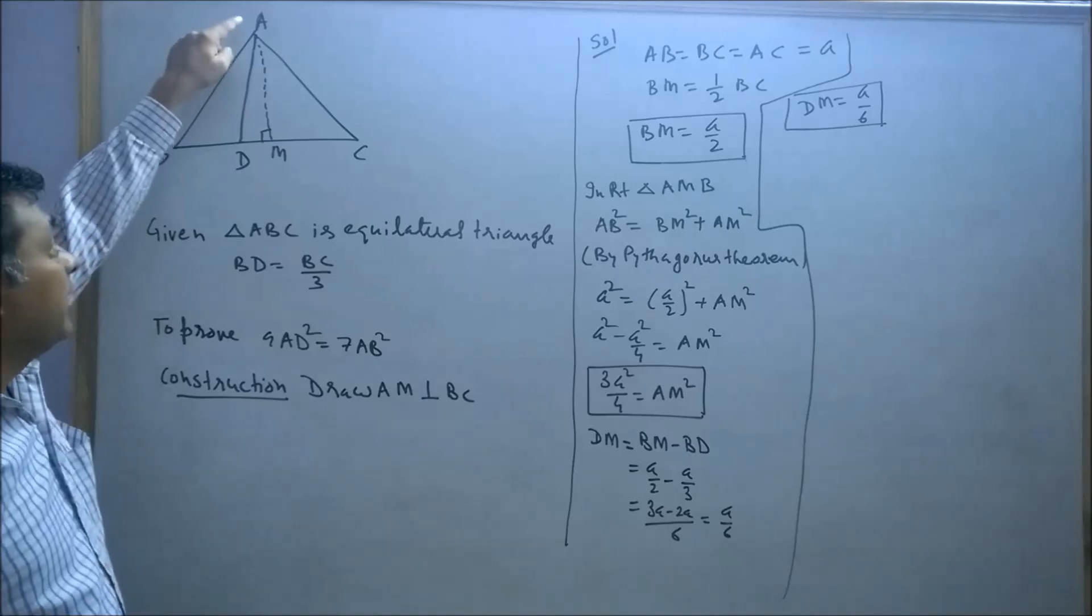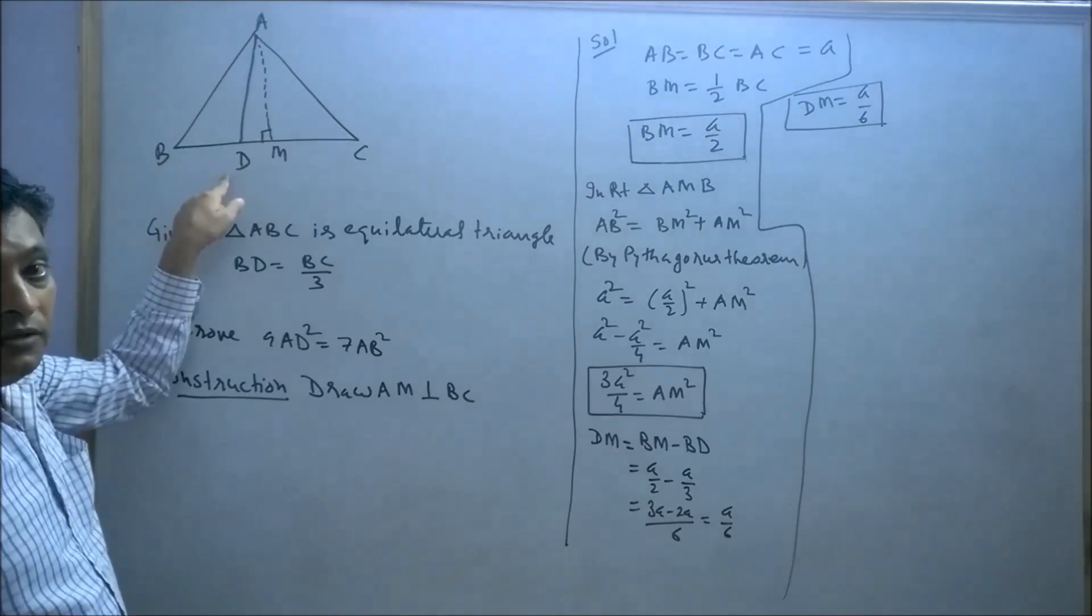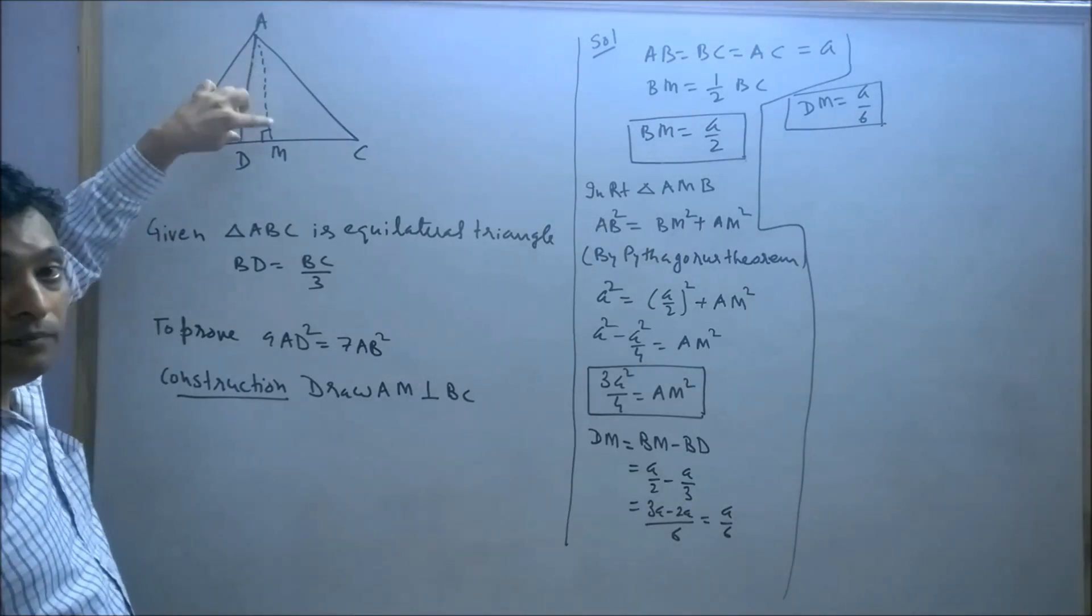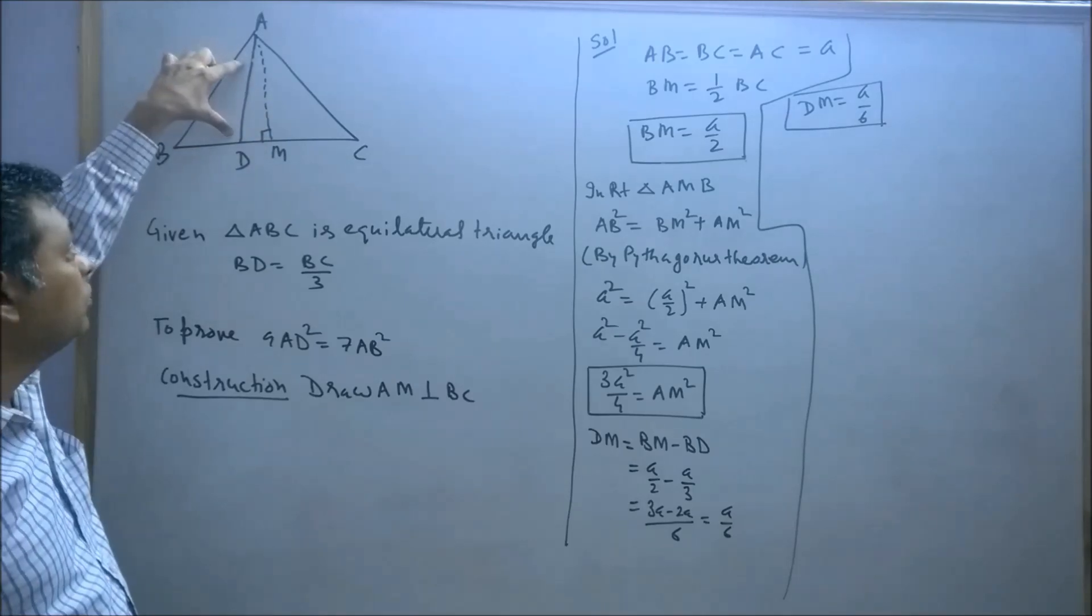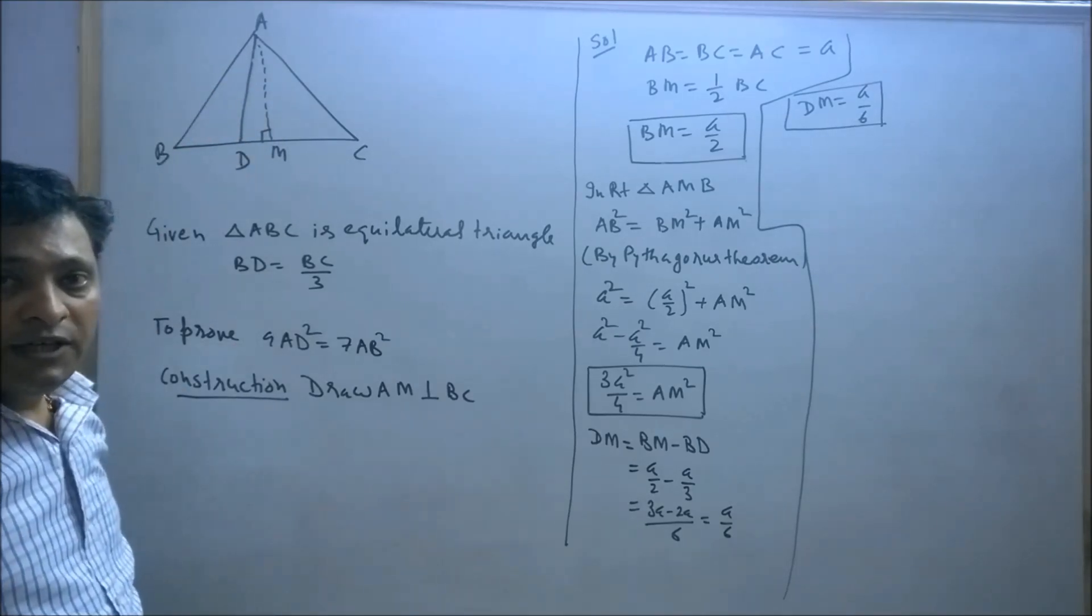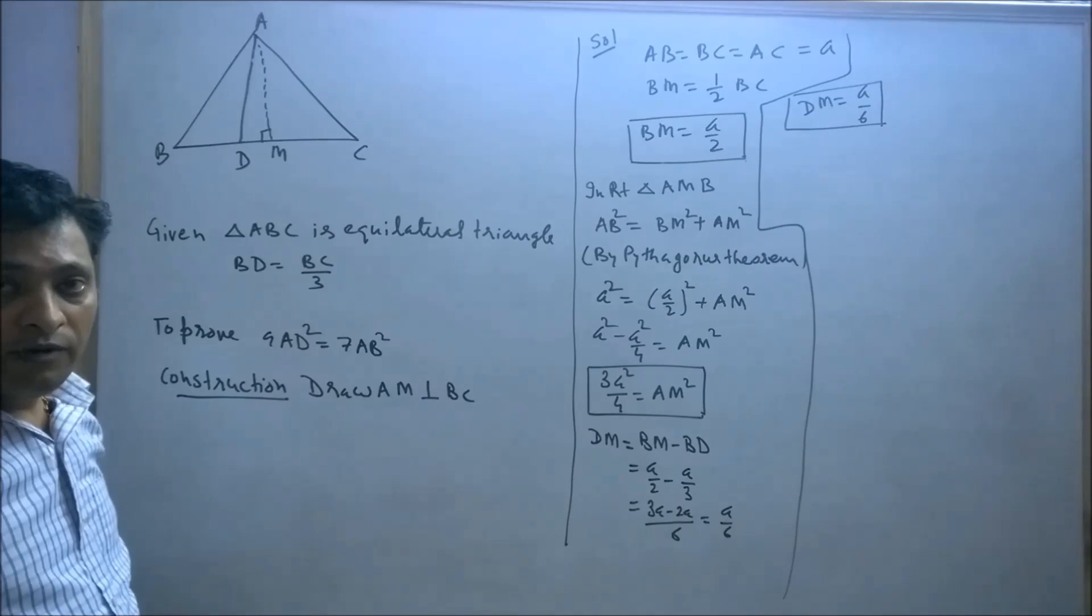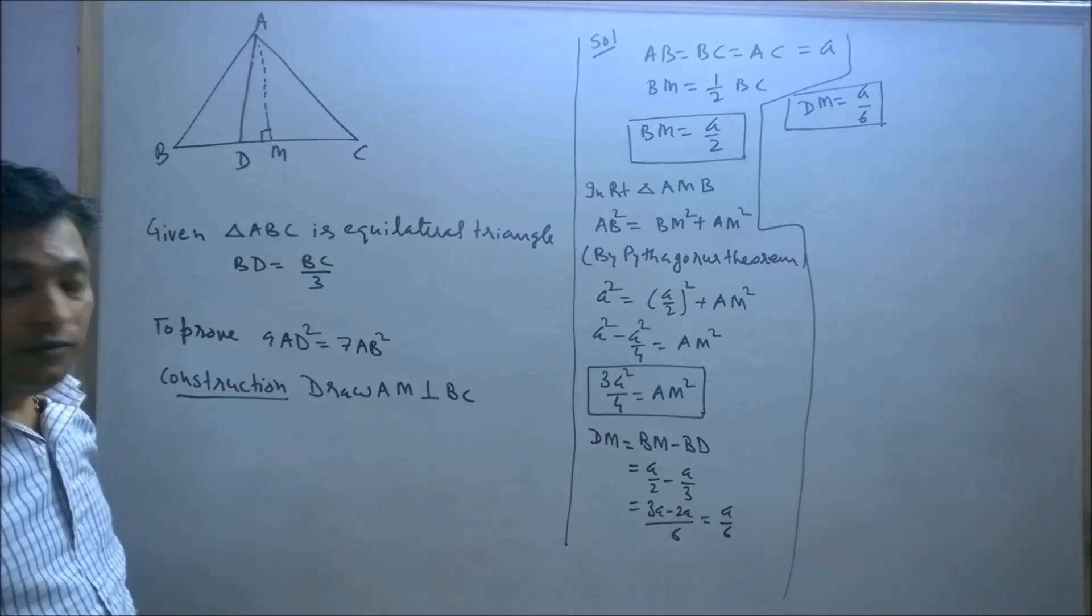Now consider right angle triangle AMD, in which AM² plus DM² equals AD². We can express AD in terms of a, and when we do so, we can show 9AD² equals 7AB².